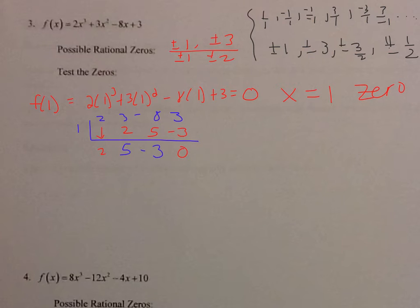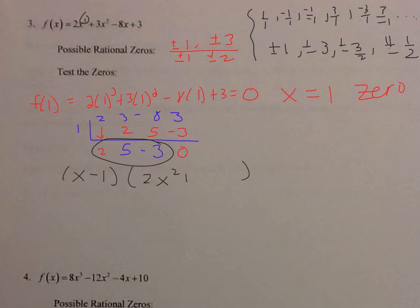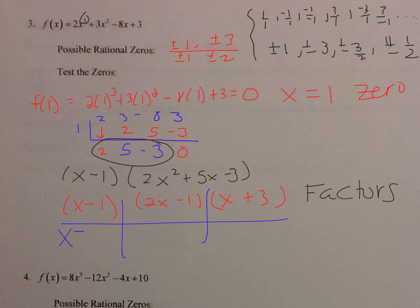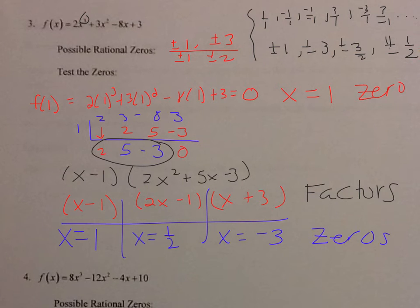So I know x minus 1 is a factor, and the remaining factor from synthetic division is 2x squared plus 5x minus 3. Factoring this trinomial gives 2x minus 1 and x plus 3. So my three zeros are x equals 1, x equals 1 half, and x equals negative 3. Notice I found one that worked and used synthetic division to get the others without testing everything.